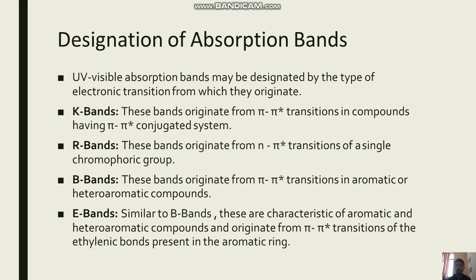UV-visible absorption bands may be designated by the type of electronic transition from which they originated. In the case of K-Band, these bands originate from Pi-Pi* transitions in compounds having a conjugated Pi system.